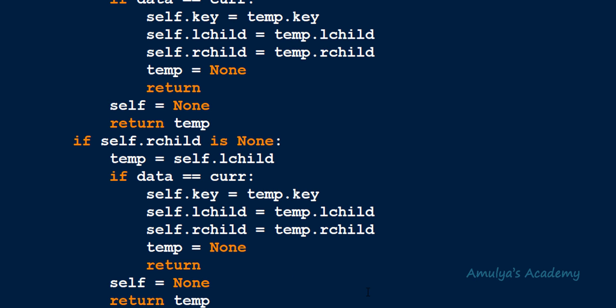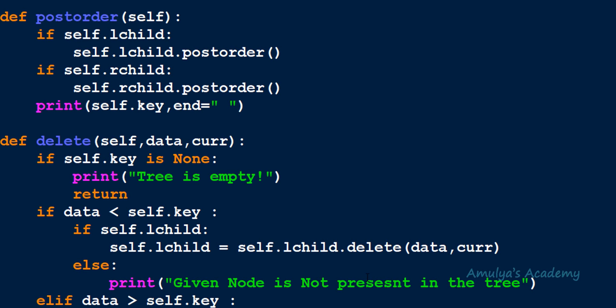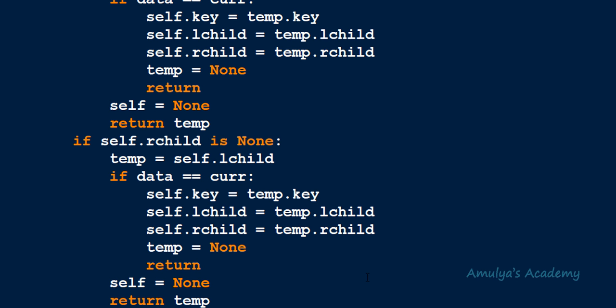That's how we can delete the root node in a binary search tree. The delete method became quite lengthy — if you have a shorter or more efficient method, please share your code as it may help many people. Thank you for watching, don't forget to subscribe to my channel, and I'll see you in the next class.